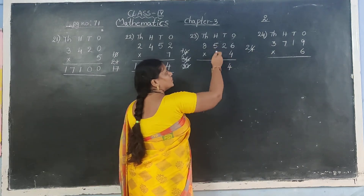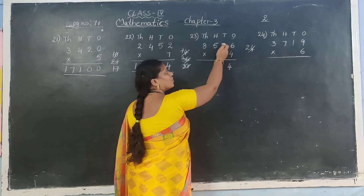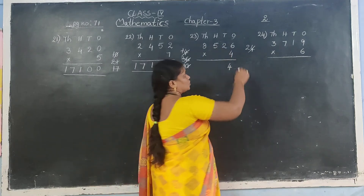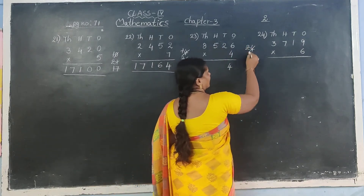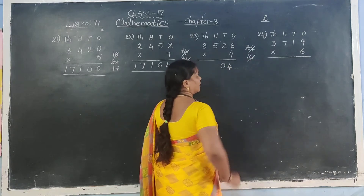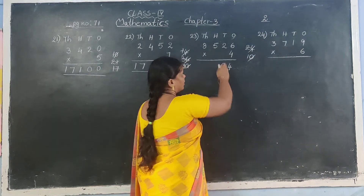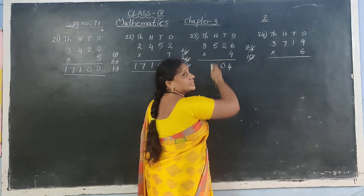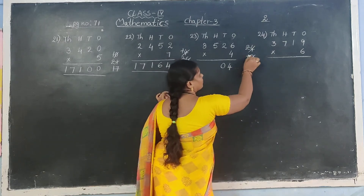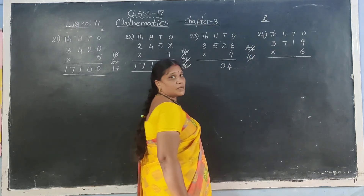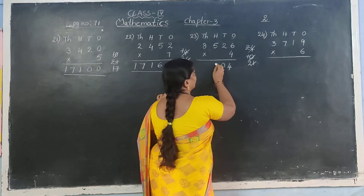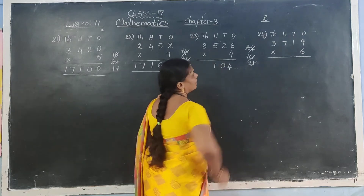Next: 4 twos are 8. 8 plus 2 is 10. Write 0 in answer, carry 1. Next: 4 fives are 20. Carry number 1 is there: 20 plus 1 is 21. Write 1 in answer, carry 2.